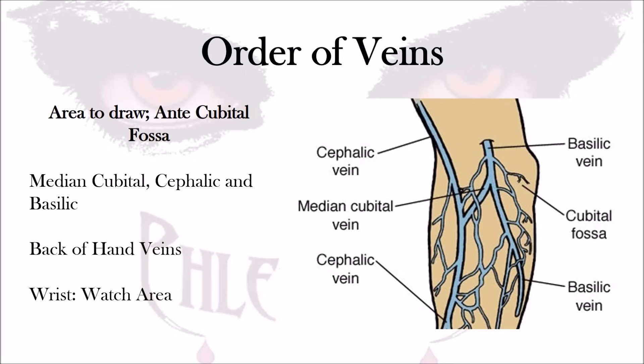My recommendation is if the median cubital is not accessible and the cephalic is not accessible, I would definitely skip the basilic vein and go to the back of the hands or the wrist area. In a minute, we're going to see why that's important — selecting the basilic vein should always be a last resort if the back of the hand and the wrist veins are not accessible either.